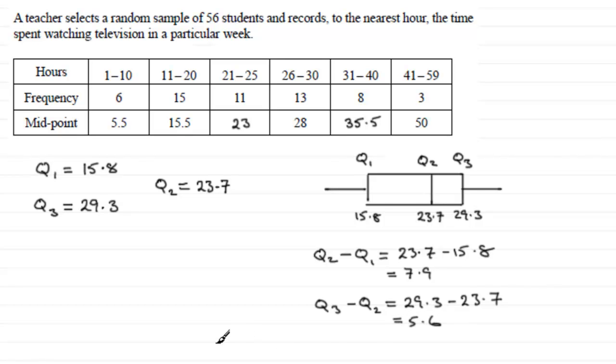So we can say that, therefore, Q2 minus Q1 is greater than Q3 minus Q2. So therefore, this implies that we've got negative skew. Thank you.